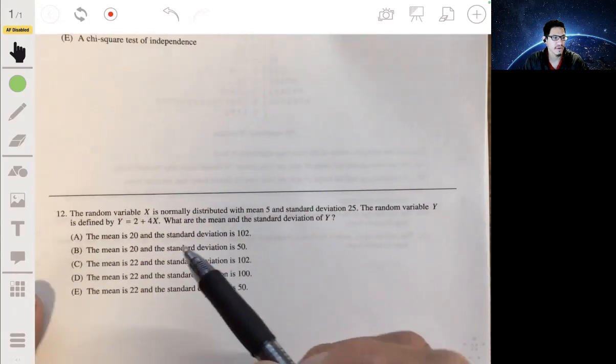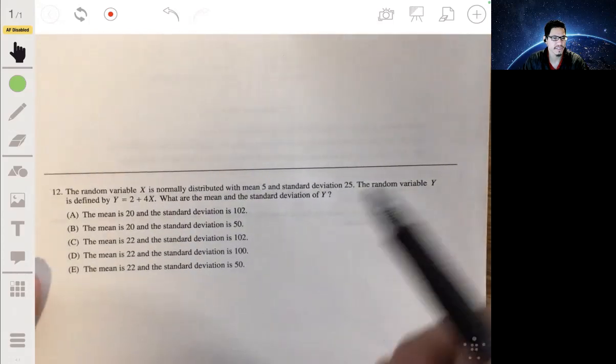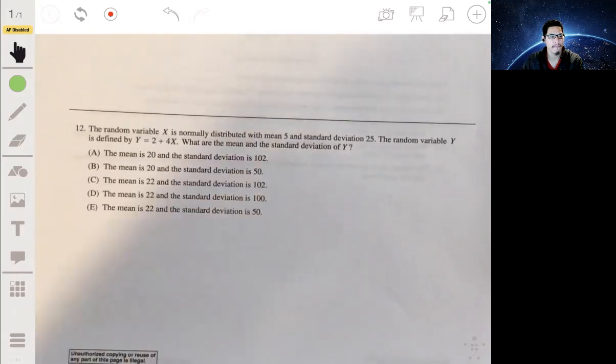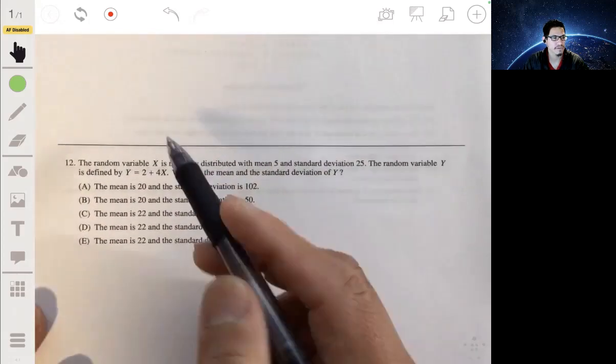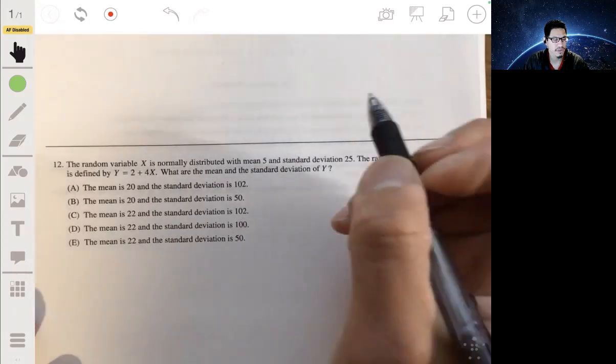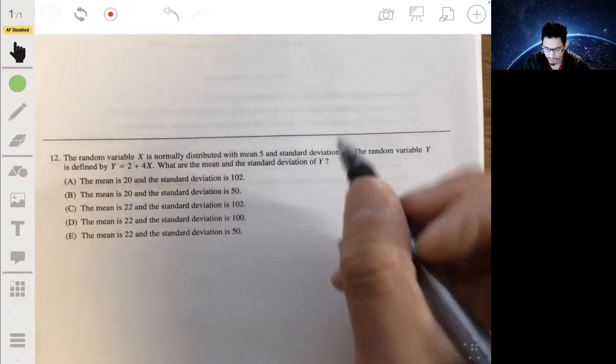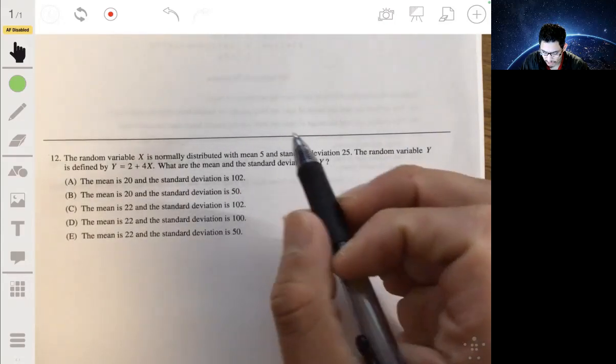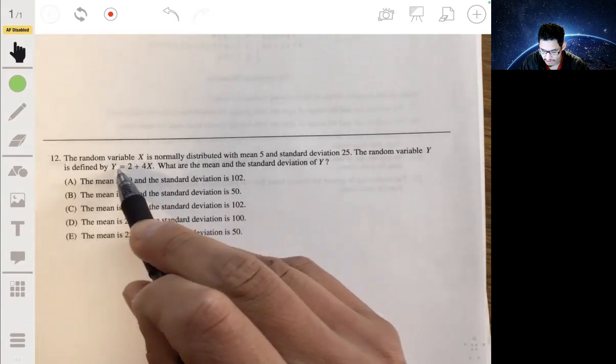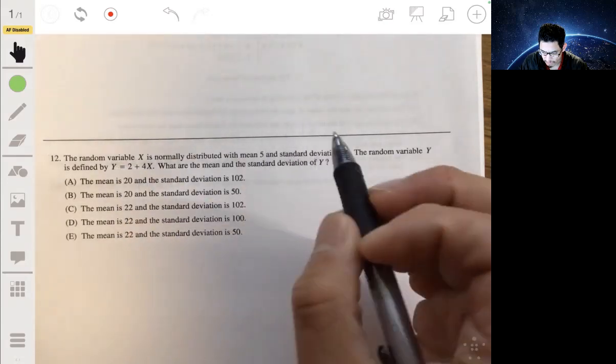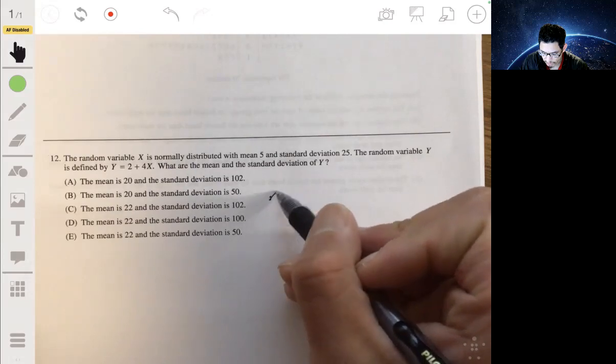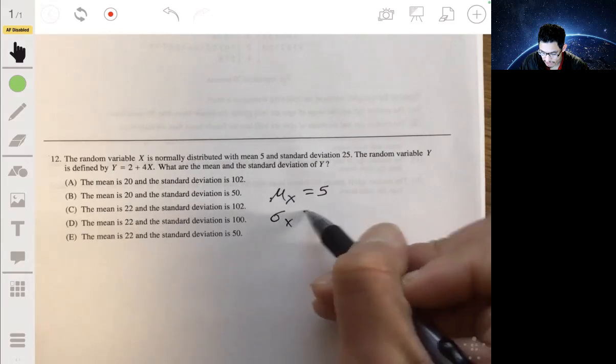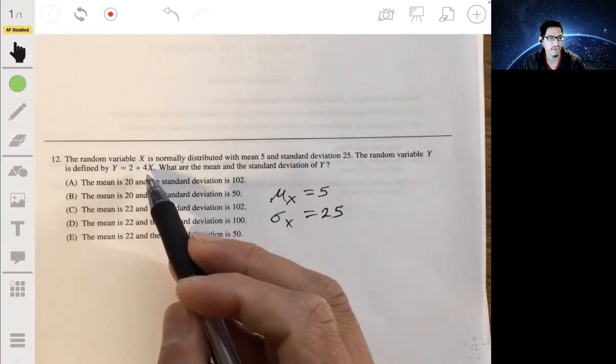Like 12, the random variable X is normally distributed with mean 5 and standard deviation 25. The random variable Y is defined by Y equals 2 plus 4X. What is the mean and standard deviation of Y? Okay, so this is an example of a random variable. And what you have to know is that we have a linear transformation of X. So we have, we're told that the mean of X is 5 and the standard deviation of X is 25. And the Y is 2 plus 4X.